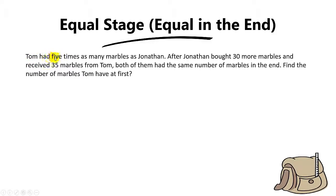In this example, Tom had five times as many marbles as Jonathan. After Jonathan bought 30 more marbles and received 35 marbles from Tom, both of them had the same number of marbles in the end. The keyword here is 'same number.' The question asks: find the number of marbles Tom had at first.